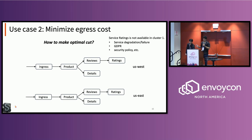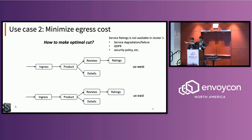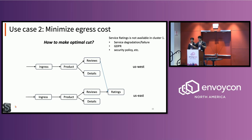The second use case is minimizing egress costs. The question is: if we have multiple ways to make a cut between regions and services, how do we choose? In the same example with two geo-distributed services, let's say ratings goes down. Requests flow from ingress to product page to reviews, and then since there's no ratings locally, it needs to go to the next available one in US East. This is probably fine, except you can make the cut in other places — you don't have to make it at reviews; it just happens because of greedy load balancing.